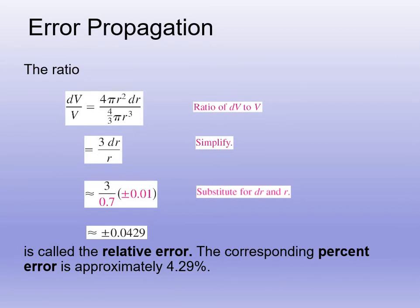We also want the relative error: take the ratio dV/V = (4πr² dr) / ((4/3)πr³) = 3 dr/r. Substituting r = 0.7 and dr = ±0.01 gives approximately ±0.0429. Multiplying by 100, our percent error is approximately 4.29%.